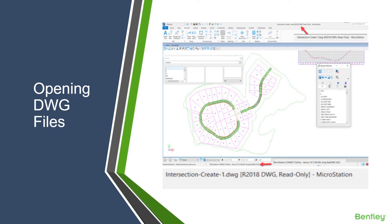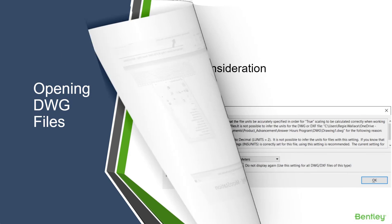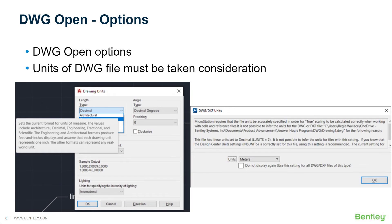The DWG work mode is strongly suggested, especially when you plan to continue saving and working in both DGN and DWG files — we'll talk more about DWG work mode shortly. When you open a DWG file, because DWG files are considered to be unitless, you have the option to decide what units will be used in the file for measurement, scaling, and reference file attachments.